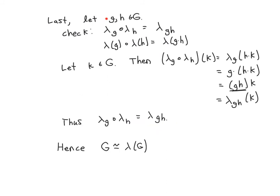Last, we need to check that for any two elements in the group, when you compose their corresponding permutations, you get the same permutation you would have obtained from the product G times H.